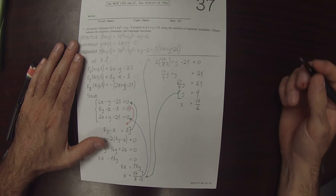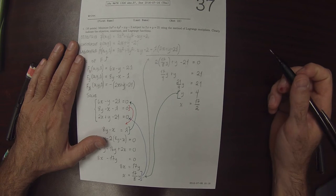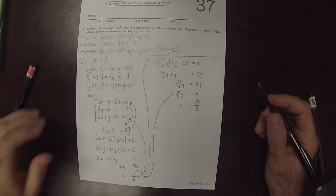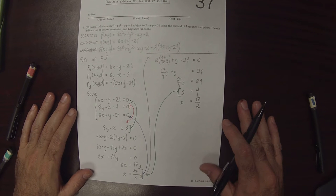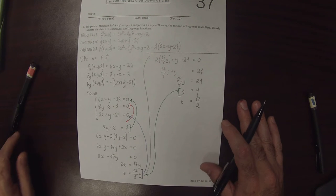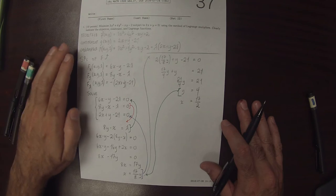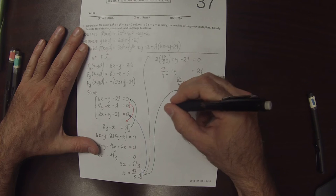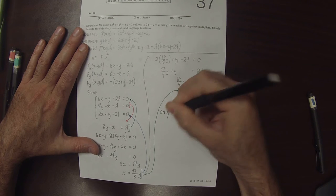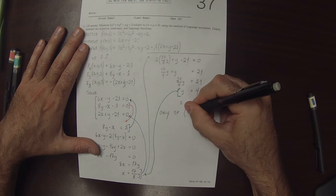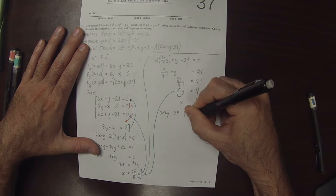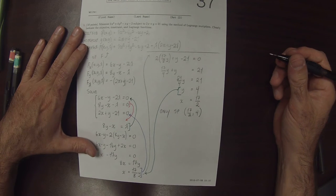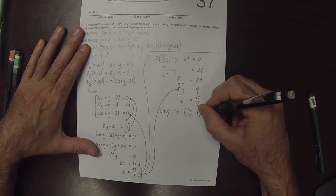So because in class we said that in a more rigorous context, like a scientific context, it's important to verify that minimums exist and maximums exist when you're looking for them. But in our class we're going to assume that they exist. Since this is the only stationary point, 17 over 2 comma 4, that means that that's the minimum we're looking for. So the only stationary point, this is the minimum.